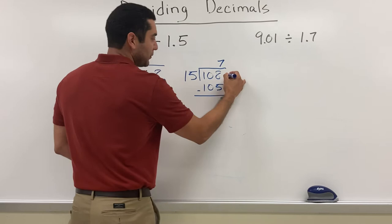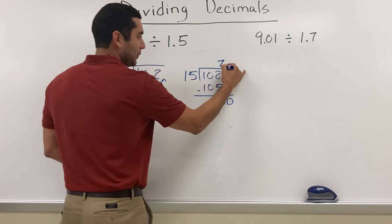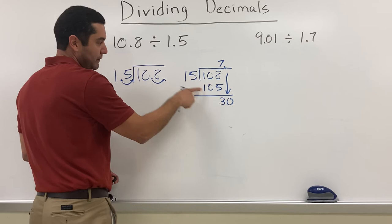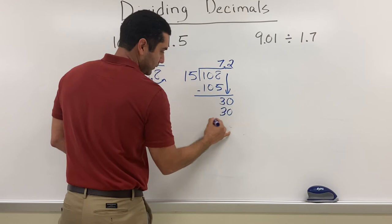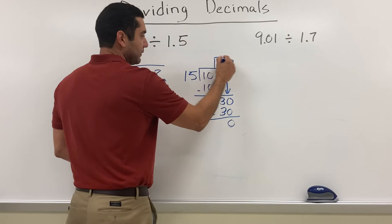That's an important part. 15 can't go into 3, so I'm going to bring down a zero. Since I'm bringing down a zero, I have to put my decimal - I put a decimal on top. And I can calculate 15 goes into 30 exactly two times. It gives me a remainder of zero, so my final answer would be 7.2.